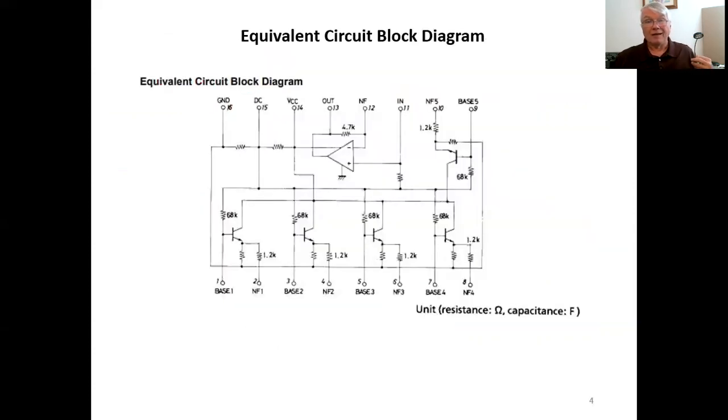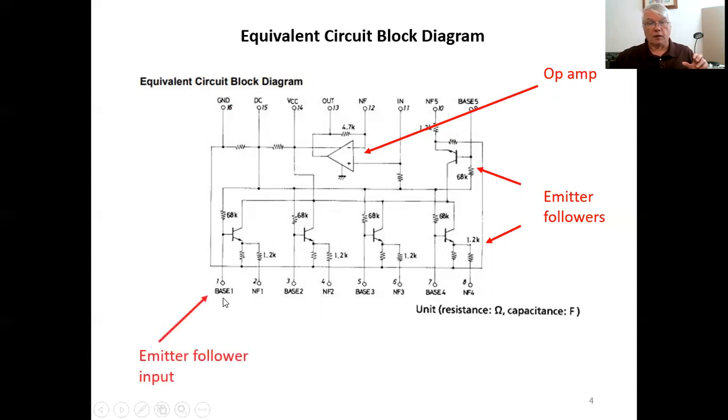The equivalent circuit block diagram for this device from the data sheet is shown here. Main components are an op amp. And then you have five NPN transistors that are connected as emitter followers. Emitter follower is an amplifier circuit that has a gain of unity. Get into that in a little more detail later. But this pins here that are labeled base, those are the input of an emitter follower. And the pins are labeled NF. Those are the emitter follower outputs with a series 1.2k internal resistance. Okay, the output of an emitter follower is taken at the emitter, the input is at the base, but here they've added a 1.2k in series. That also turns out to be important.